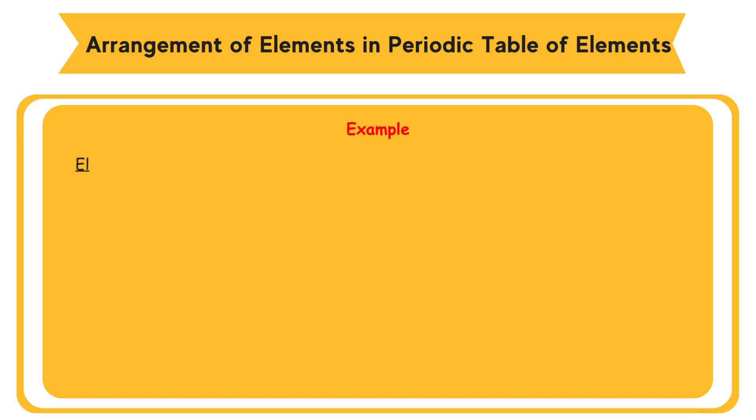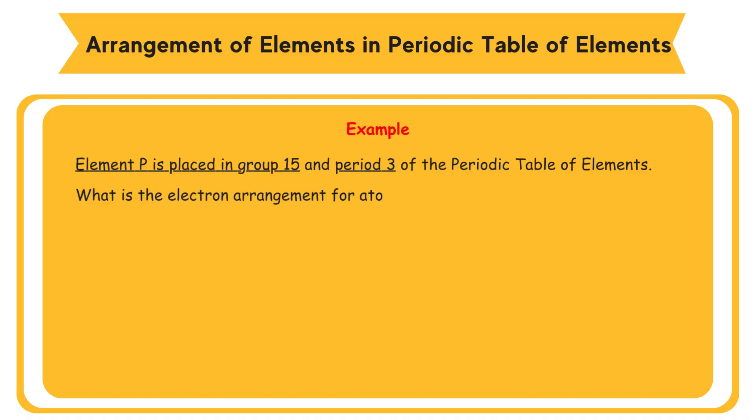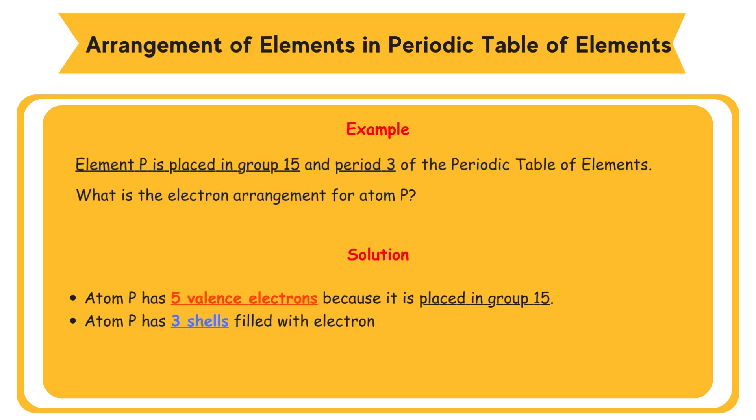Example: Element P is placed in group 15 and period 3 in the periodic table of elements. What is the electron arrangement for atom P? Solution: Atom P has 5 valence electrons because it is placed in group 15. Atom P has 3 shells filled with electrons because it is placed in period 3. Electron arrangement of atom P equals 2.8.5.